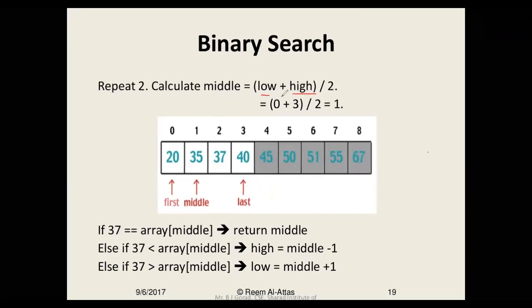Now as the value of high is 3 and low is 0, the value of middle will be 0 plus 3 divided by 2 equals 1. So the new middle is at index 1, which is 35. Again we compare array middle, that is 35, with 37, and obviously they are not equal.